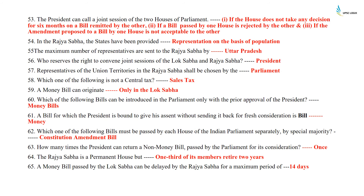The President can call a joint session of the two houses of Parliament if the house does not take any decision for six months on a bill remitted by the other house, if a bill passed by one house is rejected by the other, or if the amendment proposed to a bill by one house is not acceptable to the other. In the Rajya Sabha, states have been provided representation on the basis of population. The maximum number of representatives are sent to Rajya Sabha by Uttar Pradesh. Who reserves the right to convene joint sessions of the Lok Sabha and Rajya Sabha? It is the President. Representatives of union territories in the Rajya Sabha shall be chosen by the Parliament.